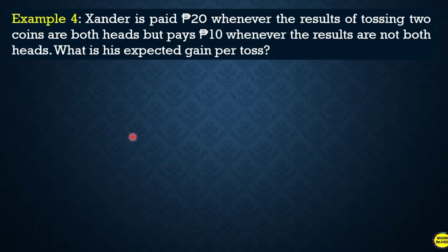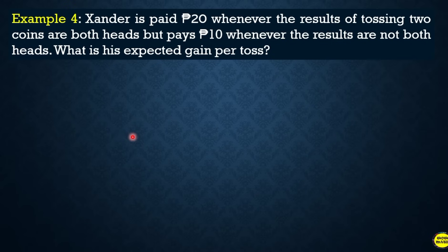For example number 4: Sander is paid 20 pesos whenever the result of tossing two coins is both heads. If the result is not both heads, Sander pays 10 pesos. How do we find the expected gain per toss? By applying the concept of computing the mean of a discrete probability distribution, we can compute this.